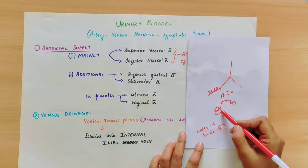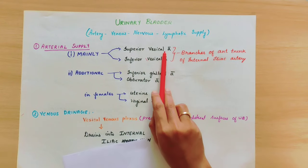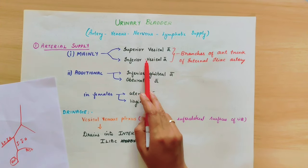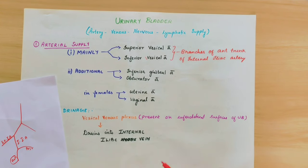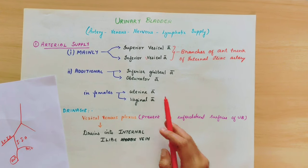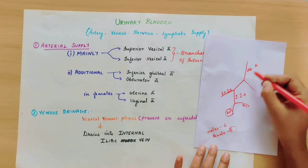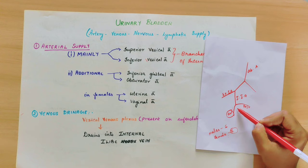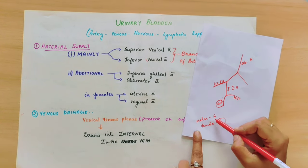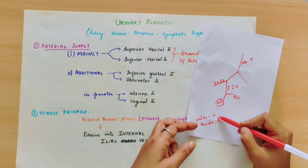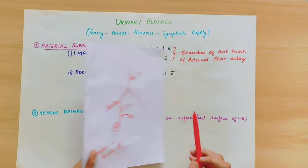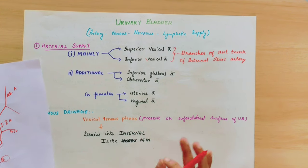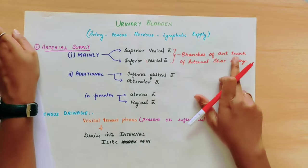In the anterior division of the internal iliac artery, the superior vesical artery and inferior vesical artery are two branches supplying the urinary bladder. The difference between male and female is that females have two additional arteries: the uterine artery and vaginal artery. The superior vesical artery is a branch of the anterior trunk of the internal iliac artery.